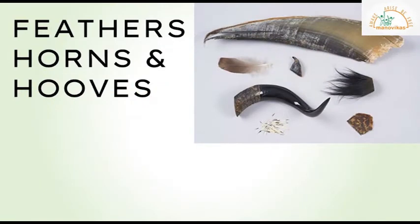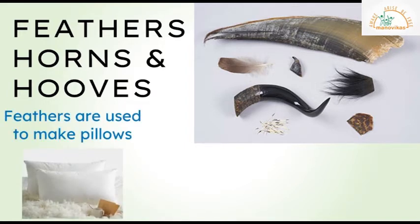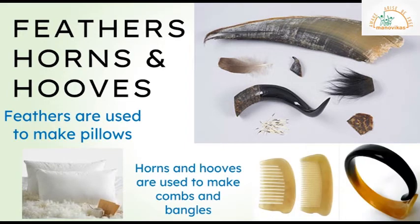Feathers, horns, and hooves of some animals are used to make many things. Feathers are used to make pillows. Horns and hooves are used to make combs and bangles.